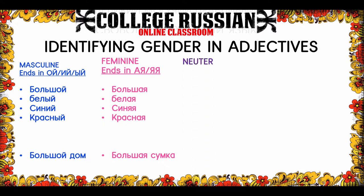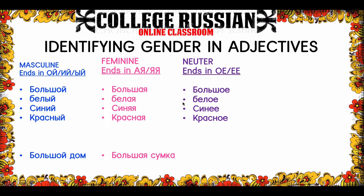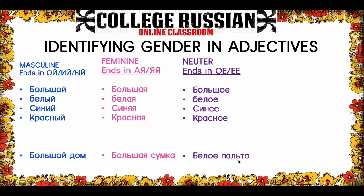Next is neuter. French and Spanish don't have this gender, but Russian has a neuter gender. You can notice these by the ое and the ее on the end. So: большое, белое, синяя, красное. If you're interested to know why you get ее sometimes and ое, you can look up my video on hard and soft consonants, and that will help you understand why. So for example, пальто is neuter, so we need to describe it with a neuter adjective: белое пальто.